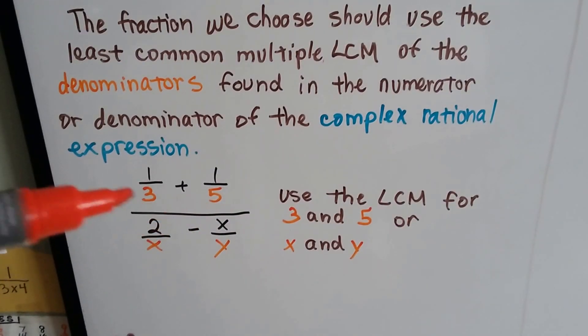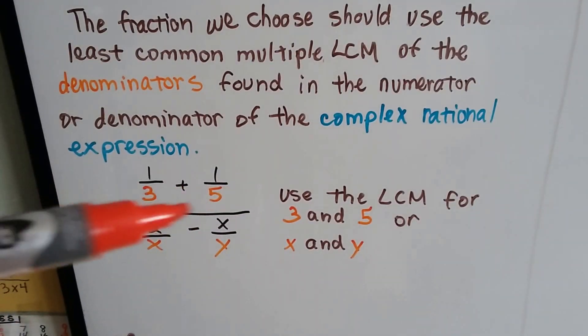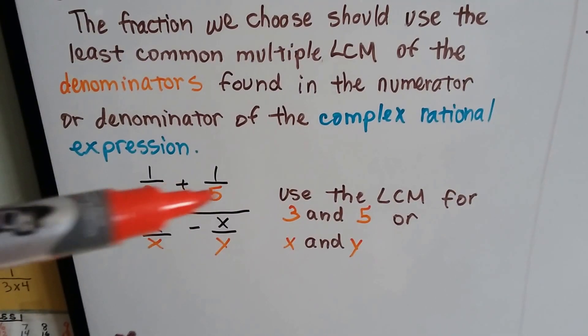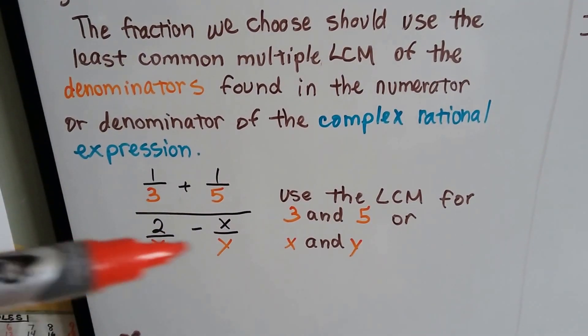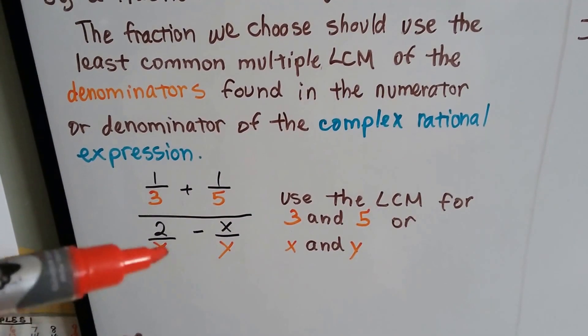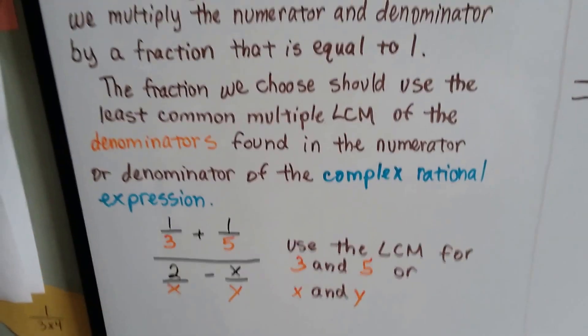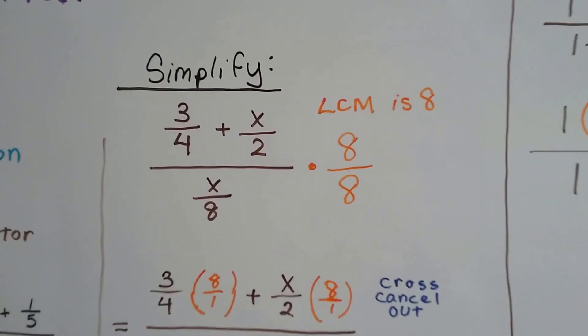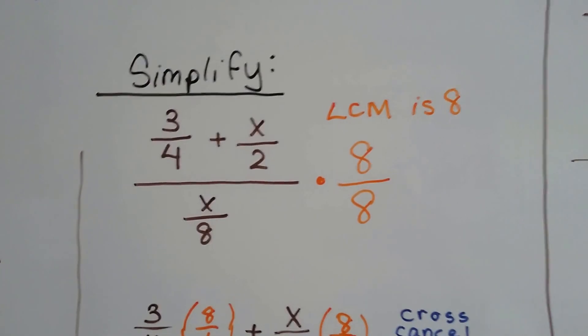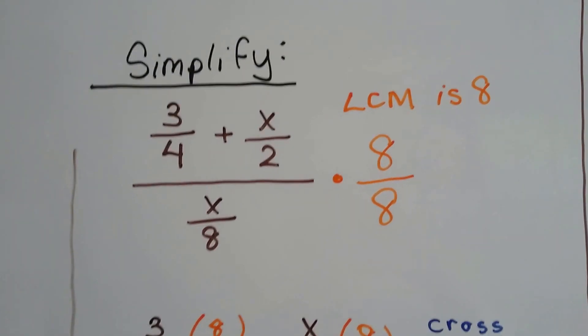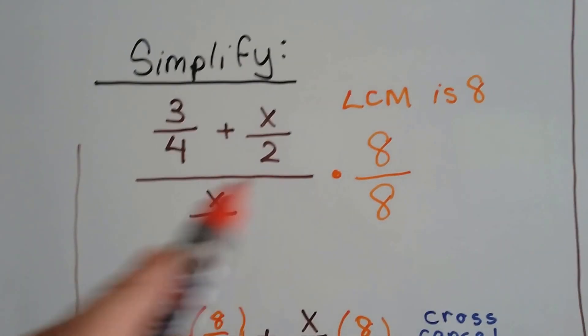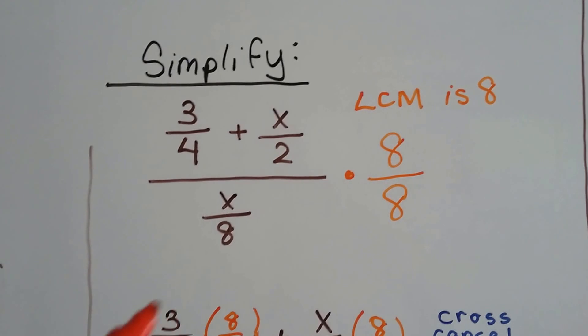So, 3 and 5 can meet at 15, and then we have x and y as the LCM for these. Take a look at this: we've got 3 fourths plus x over 2, and that is over x over 8.